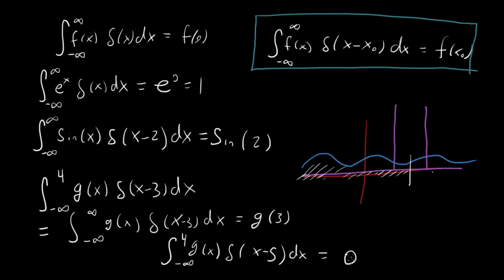These are really the core properties of the delta function you'll see in practice. The first thing to know is that integrating some function multiplied by the delta function just picks out a single point from that function and returns that as the value of the integral. The other thing is that depending on your bounds of integration, you have to make sure the point where the delta function peaks is included — if it isn't, the integral is 0; otherwise it equals the function evaluated at that point. In the next video I'll go into more properties and do more examples.